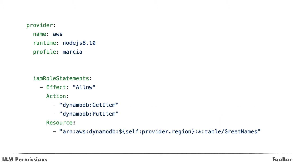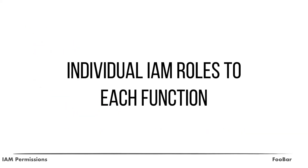In my videos you've seen that I always put the permissions definition under the provider in the IAM role statements property. With this approach I'm giving the same permissions to all functions in the project even if a function doesn't need a particular permission. A better practice is to give each individual function the right permissions by creating a role per function. The Serverless Framework doesn't support this out of the box, but there is a plugin that can help — I'll link it in the description box and we'll use it in the code.